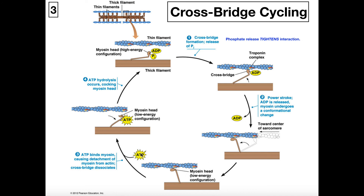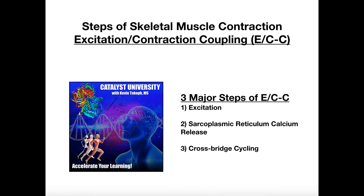ATP then attaches to the myosin, which causes the detachment of myosin from actin. ATP is then hydrolyzed to reactivate myosin into its activated position, and the cycle repeats itself. Hopefully this video made sense and you understand the process of excitation-contraction coupling.